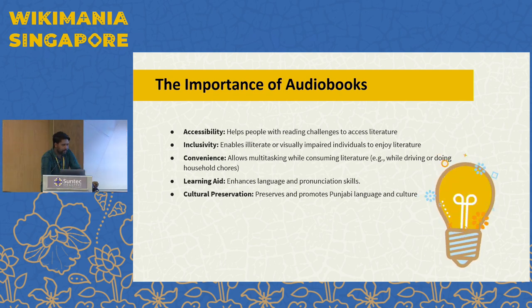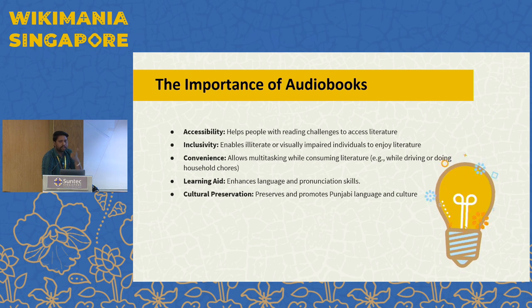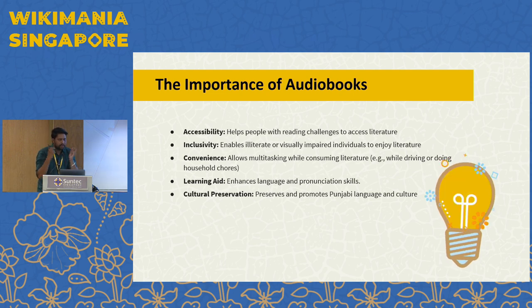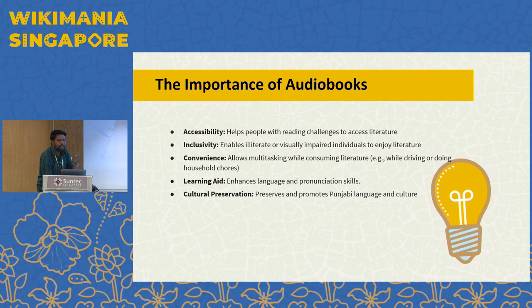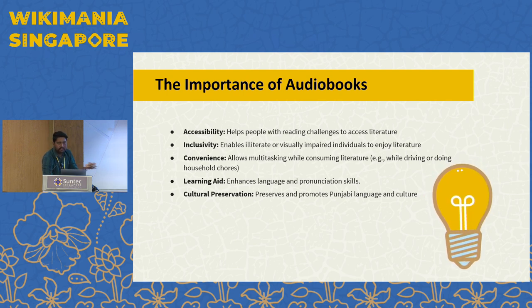The second point of importance is that one of my friends has some difficulty in reading because his eyesight is not good. What we used to do in college — we would record our lessons and he would listen to them. He somehow passed with this technique. That's why we think there are people who are not good at reading because of eyesight problems, but they can consume literature with this kind of project.